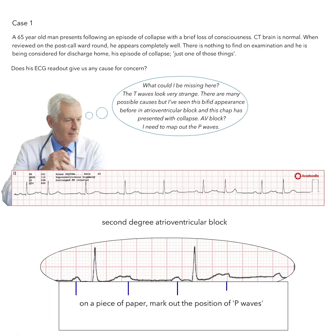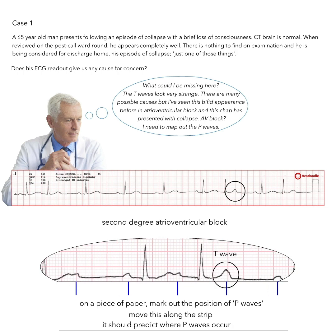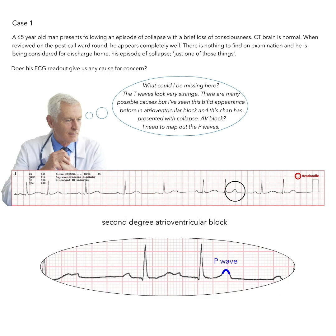Mapping out the P-waves with a pen on a piece of paper, when we move this paper along the readout, we find that the T-wave of this deflection directly overlies the site of a predicted P-wave. We also note that the T-wave itself is significantly taller than its fellows. A P-wave is almost certainly fused with this T-wave, increasing the T-wave amplitude, and this P-wave has not been conducted to the ventricles.